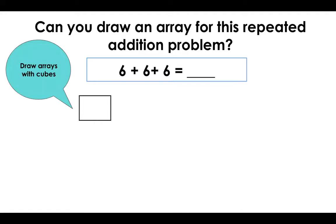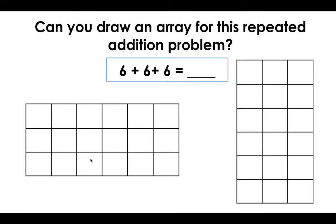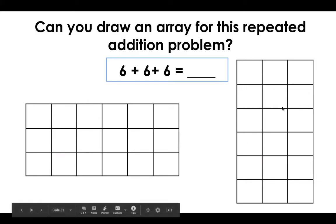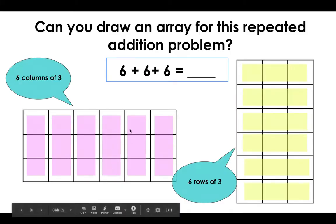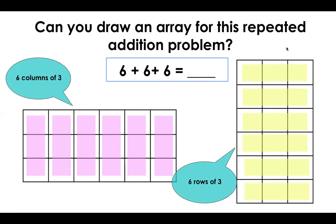Let's take a peek at one more: six plus six plus six. Go ahead and pause the video and see if you can figure it out on your own. I have six plus six plus six shown here in an array. Are both correct? They are. This one shows six columns of three, and this shows six rows of three — three, three, three, three, three, and three. So both will show me that six plus six plus six equals eighteen.